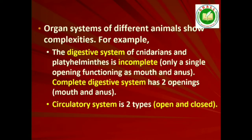Organ systems in different groups of animals exhibit various patterns of complexities. For example, the digestive system in Platyhelminthes has only a single opening to the outside of the body that serves as both mouth and anus, and is hence called incomplete. A complete digestive system has two openings — mouth and anus. Similarly, the circulatory system may be of two types: open type, in which the blood is pumped out of the heart and the cells and tissues are directly bathed in it; and closed type, in which the blood is circulated through a series of vessels — arteries, veins and capillaries.